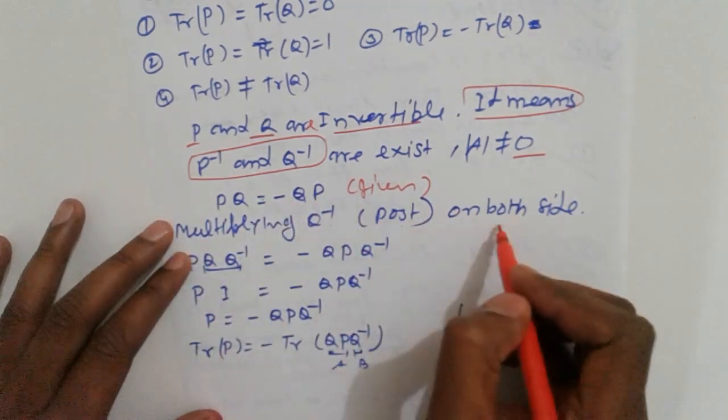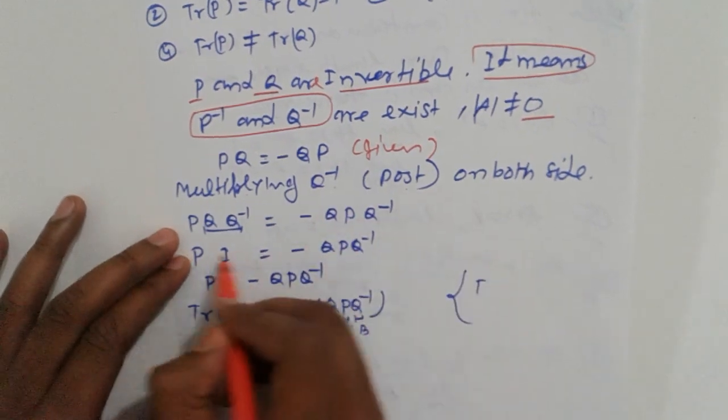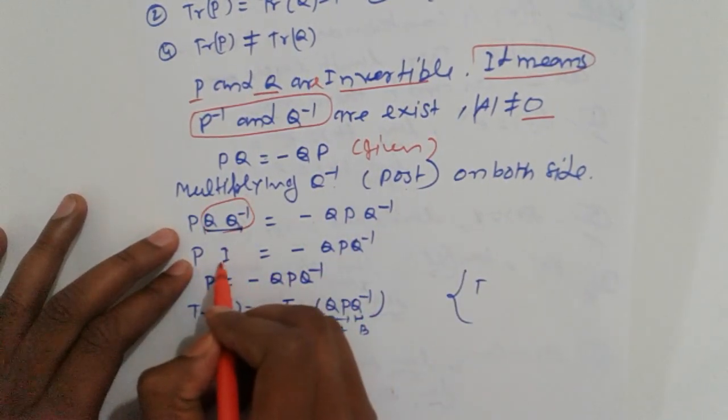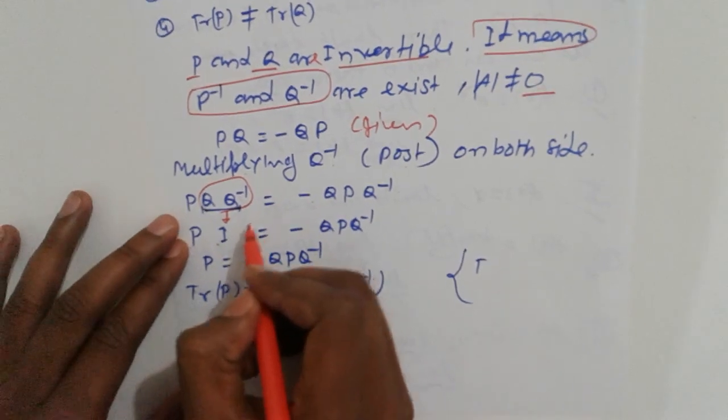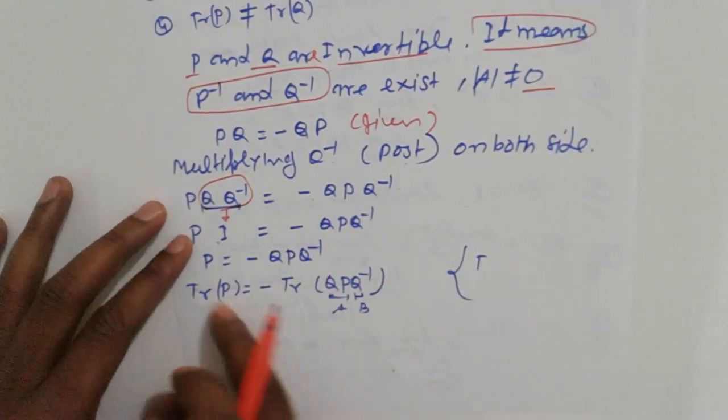PQ Q inverse equals QP Q inverse. That term is I. So P is equal to... trace of P equals trace of QP Q inverse.